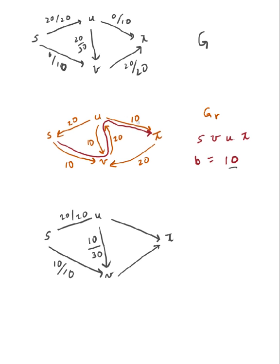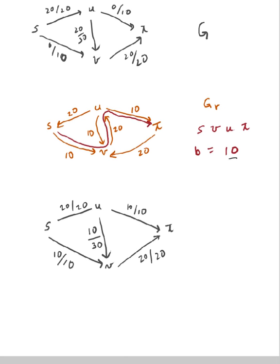Going from U to T, I add 10 units, so that's 10 out of 10 actual flow. The last edge, V to T, has no change: 20 out of 20. Let's verify: none of my actual flows exceed my capacities. Checking conservation — coming into U I have 20, going out I have 10 plus 10, that's okay. Coming into V I have 10 plus 10 equals 20, going out I have 20 — that's okay.